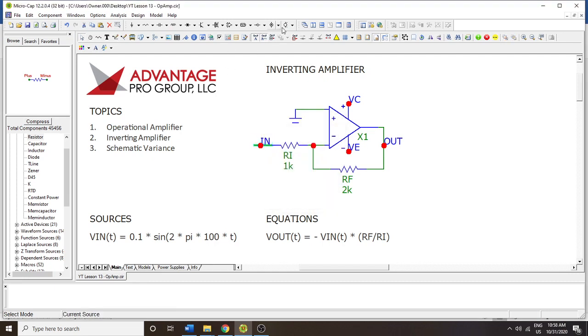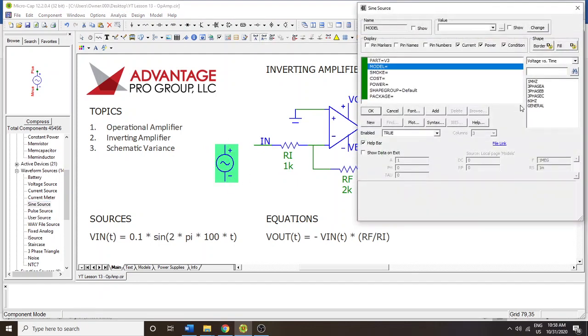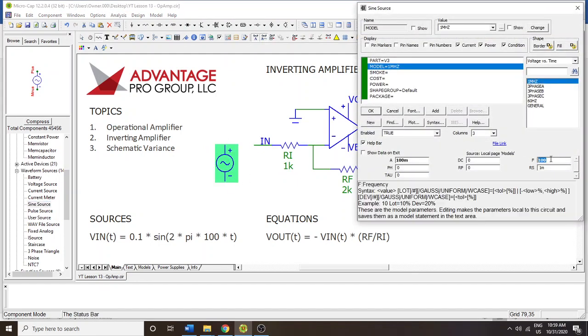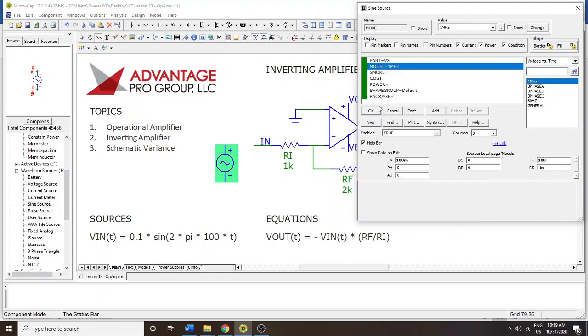So we're just going to choose that real quick. So here we go. Sine source, connected. And you choose the 1MHz model, but you can choose any frequency that you want to. It's 100 Hz and 100 mV signal.